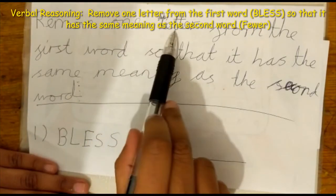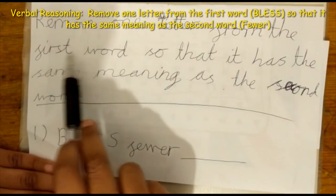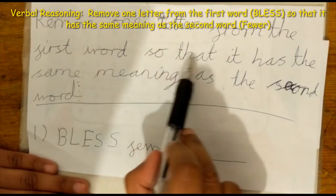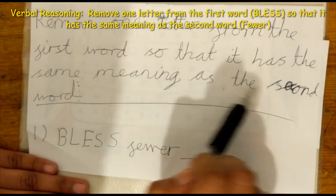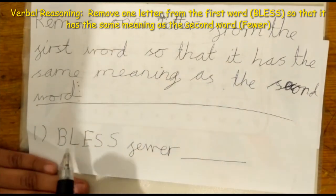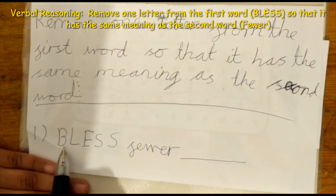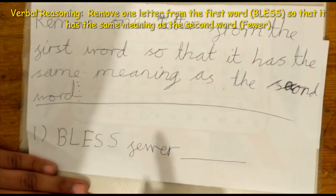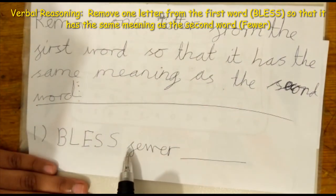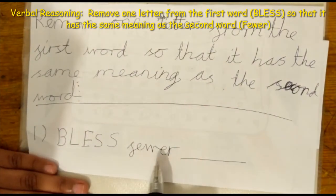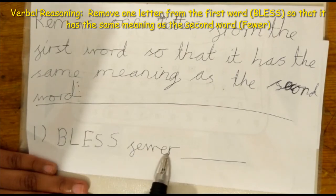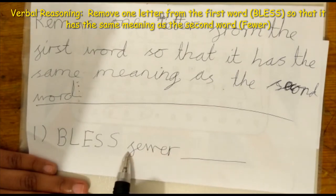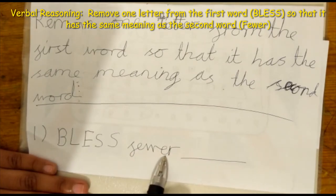Remove one letter from the first word so that it has the same meaning as the second word. The first word is 'bless' and the second word is 'fewer.' So we need to find the meaning of fewer. The meaning of fewer is less.